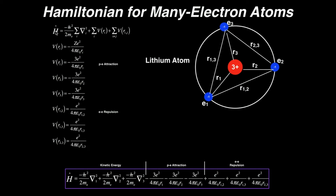Remember the Hamiltonian is the sum of all the kinetic energy terms plus all of the attractive terms plus all of the repulsive terms. The potential energy terms — particularly the attractions — are given by this formula: negative z times e squared over four pi epsilon zero times that particular radius.